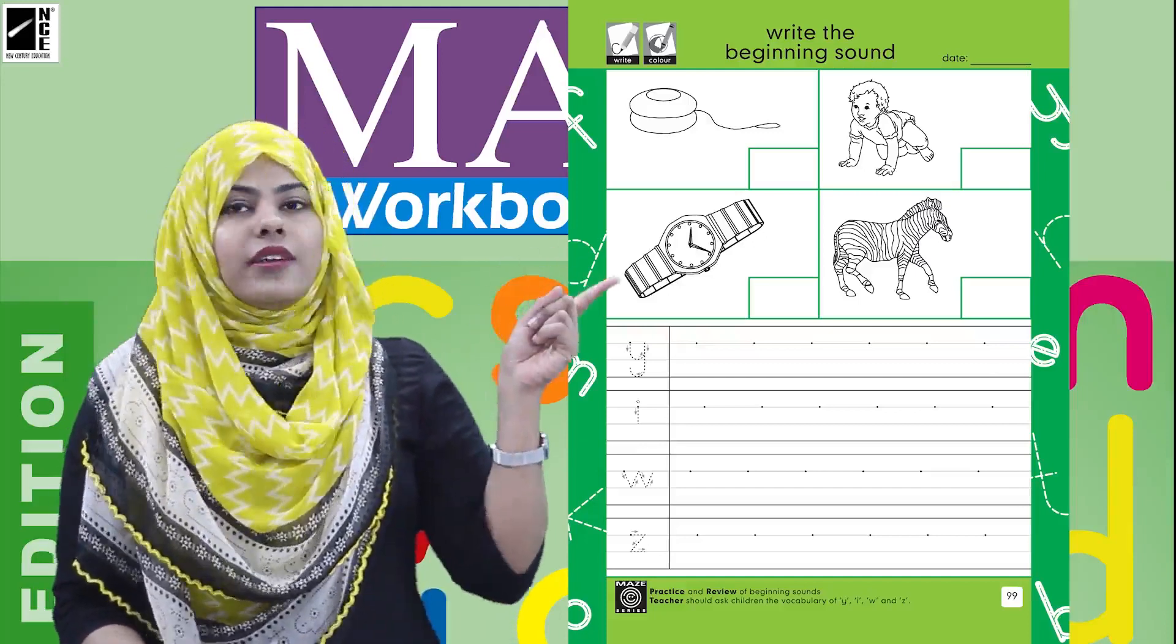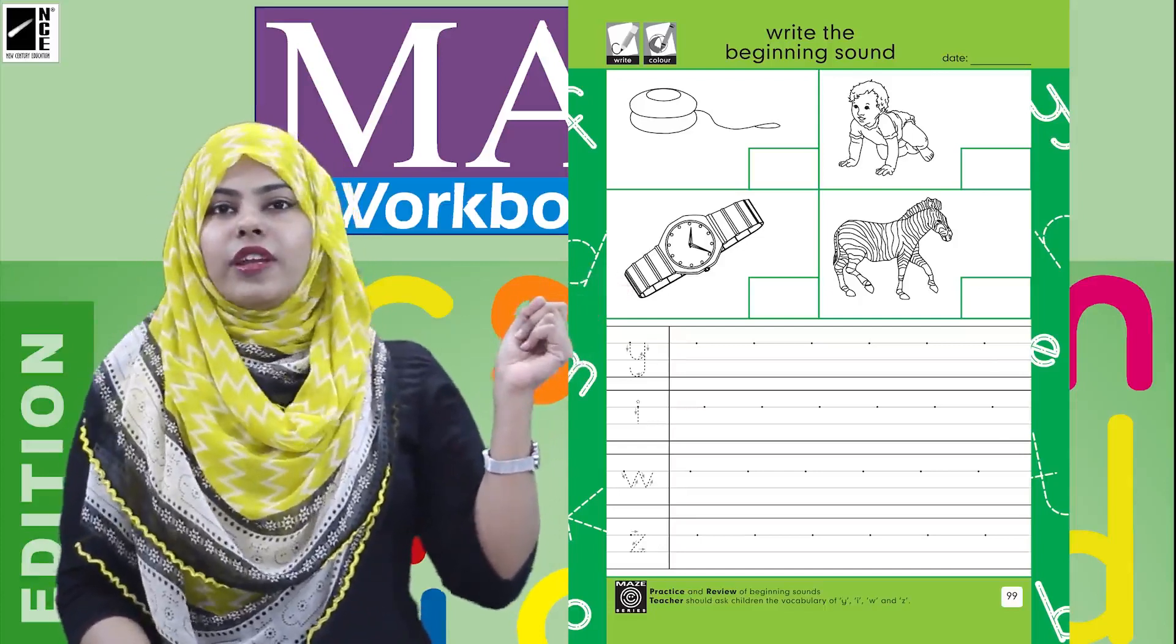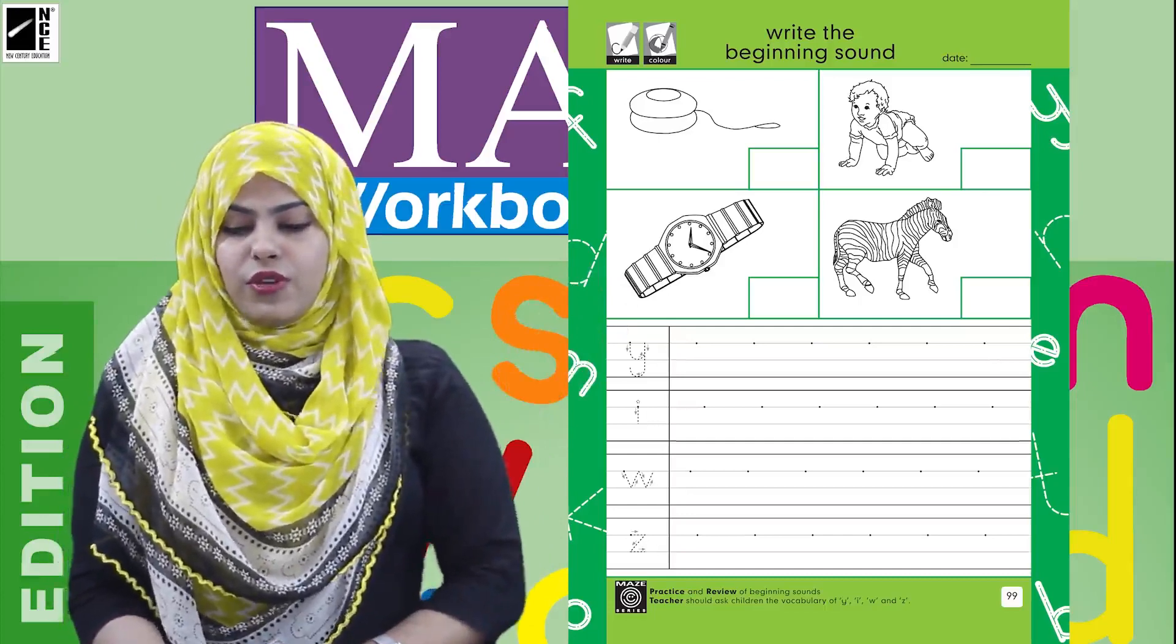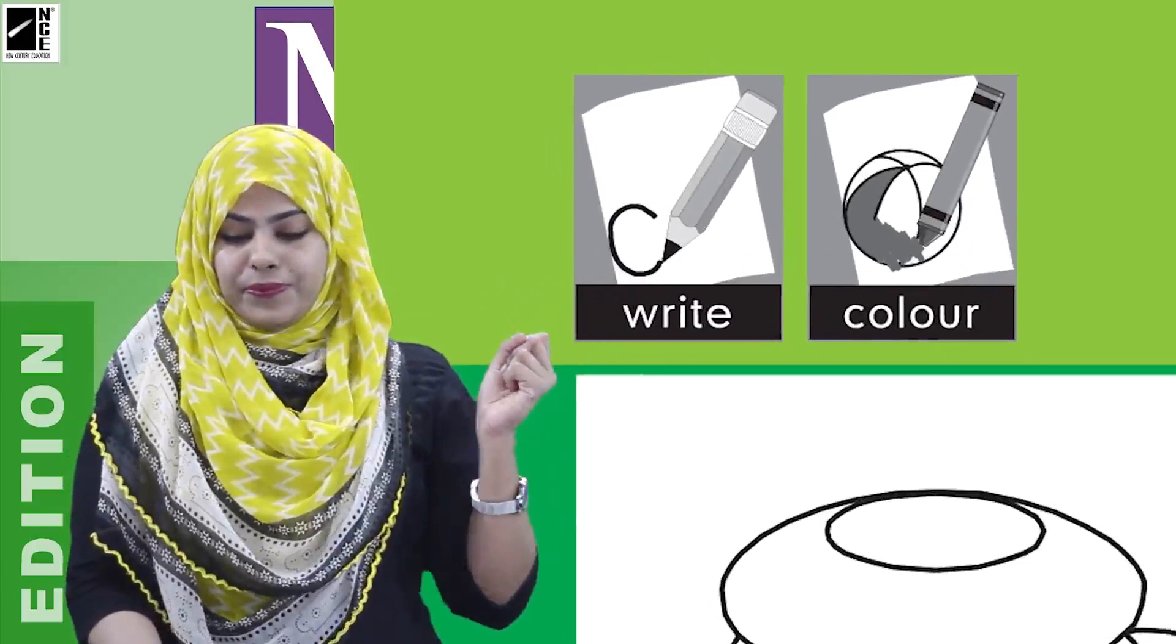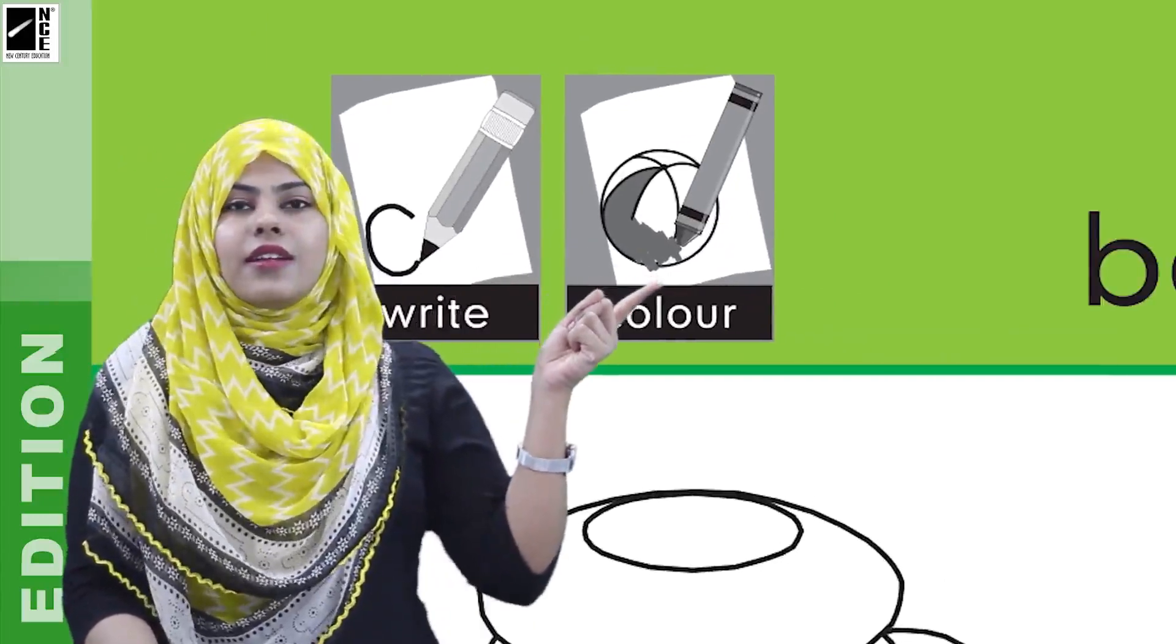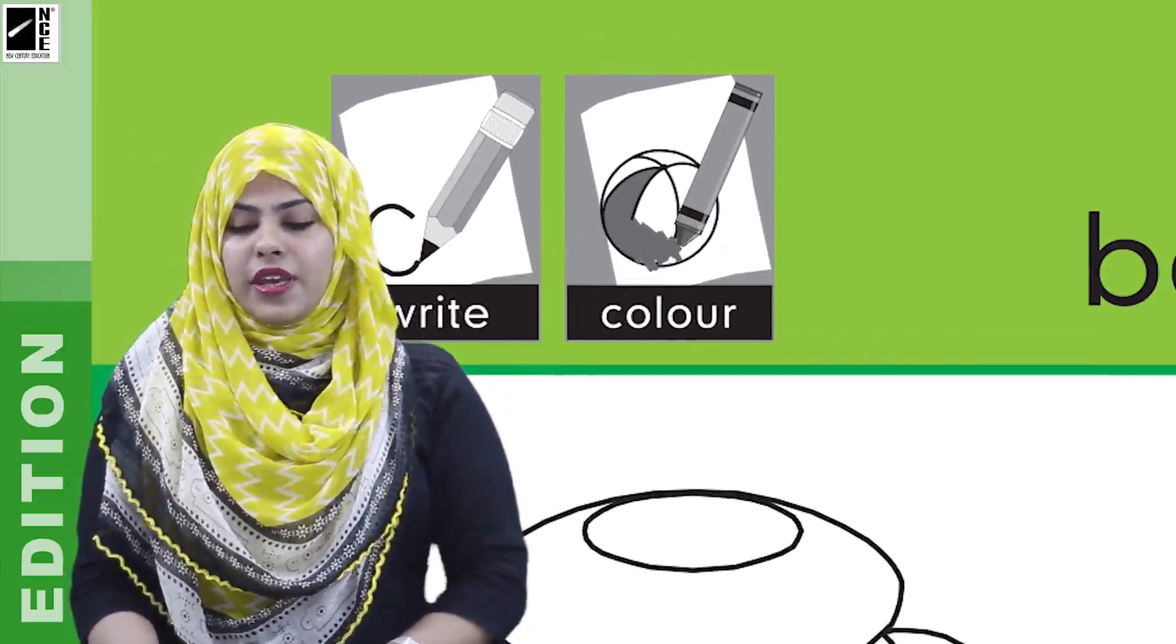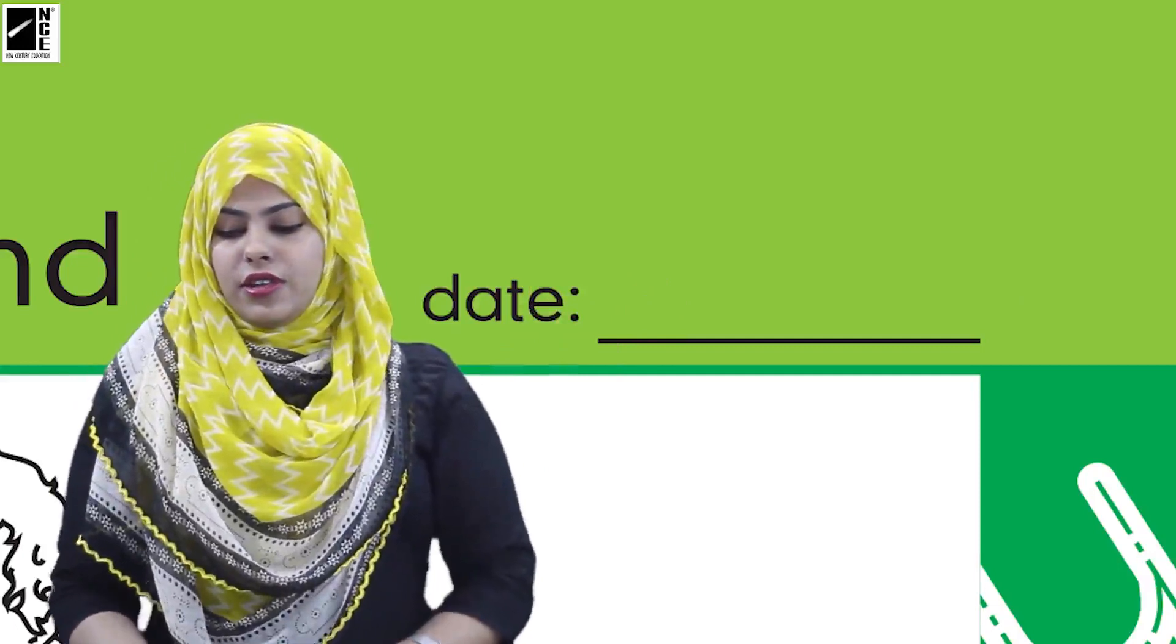Look over here. We have a page with some pictures and some sounds. First of all, read the icons with me. First one is write, second is color. So we have to write and color something on this page and then write the date in the date section. Okay, now look at the pictures first.